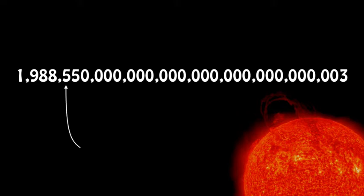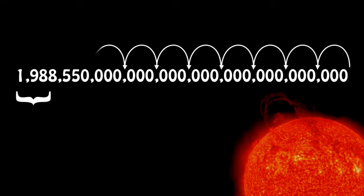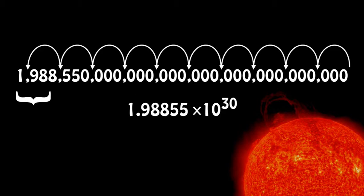What about this number? Well, if we increase that, that's like changing the mass of the sun by throwing in a dozen Earths — still not that significant. So what we really want is something that allows us to capture the important information efficiently. That looks like 30 steps, and the mass of the sun is 1.98855 times 10 to the 30th kilograms. That's a nice compact way to describe the number.